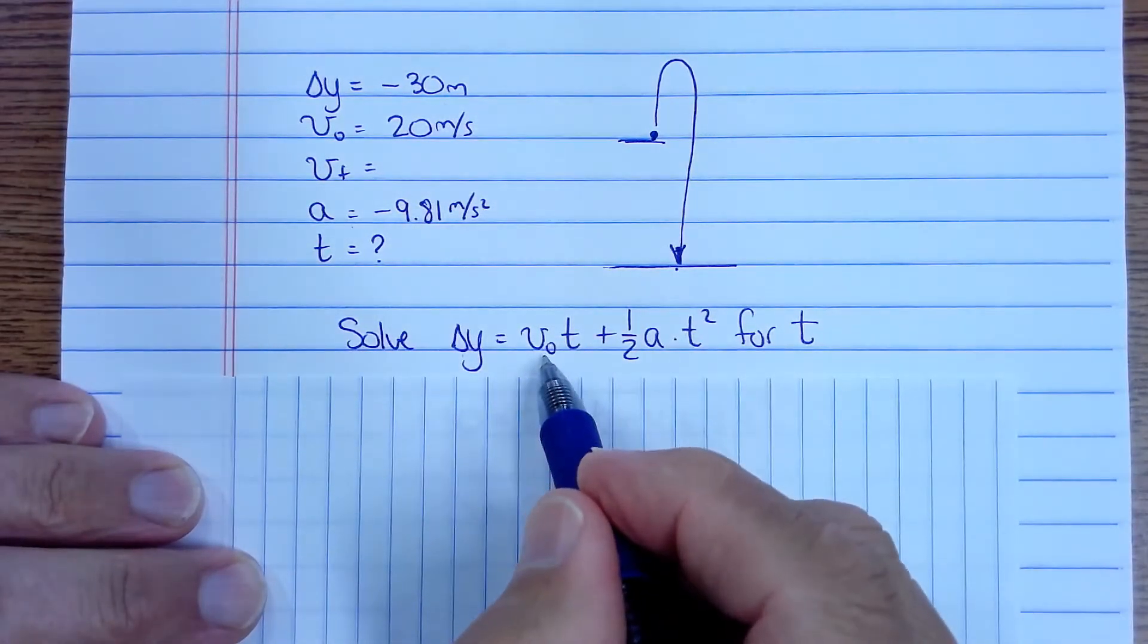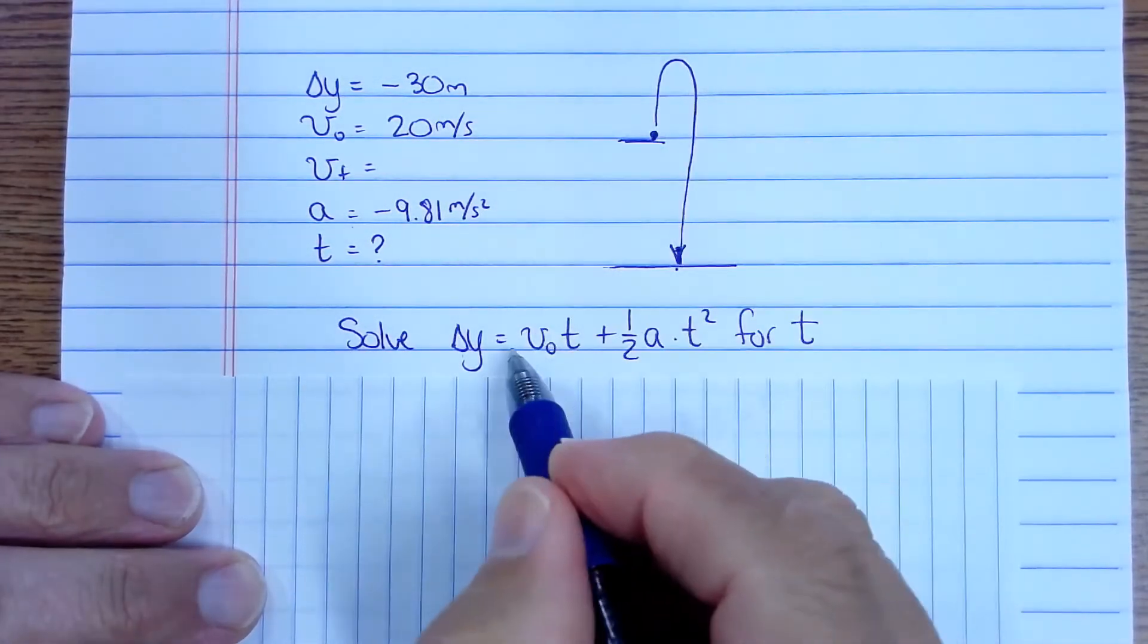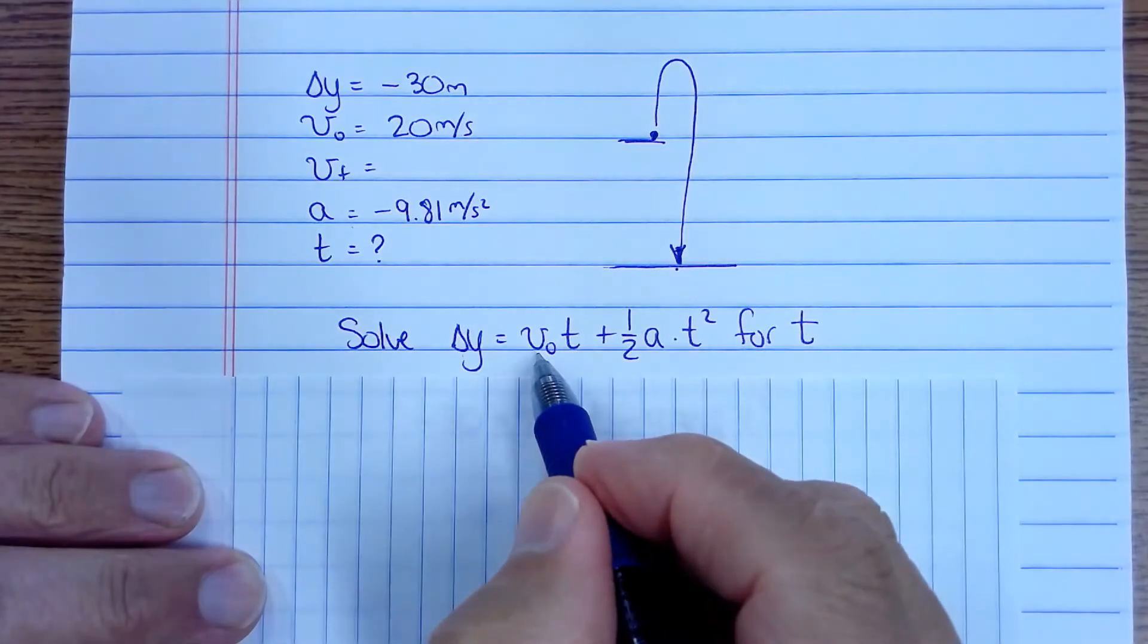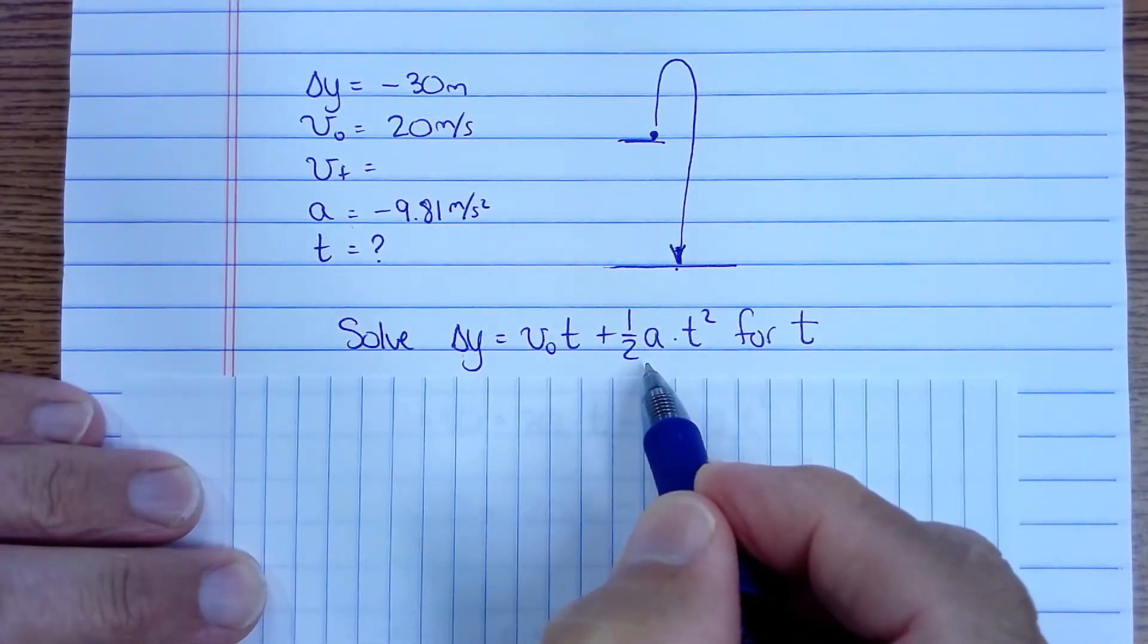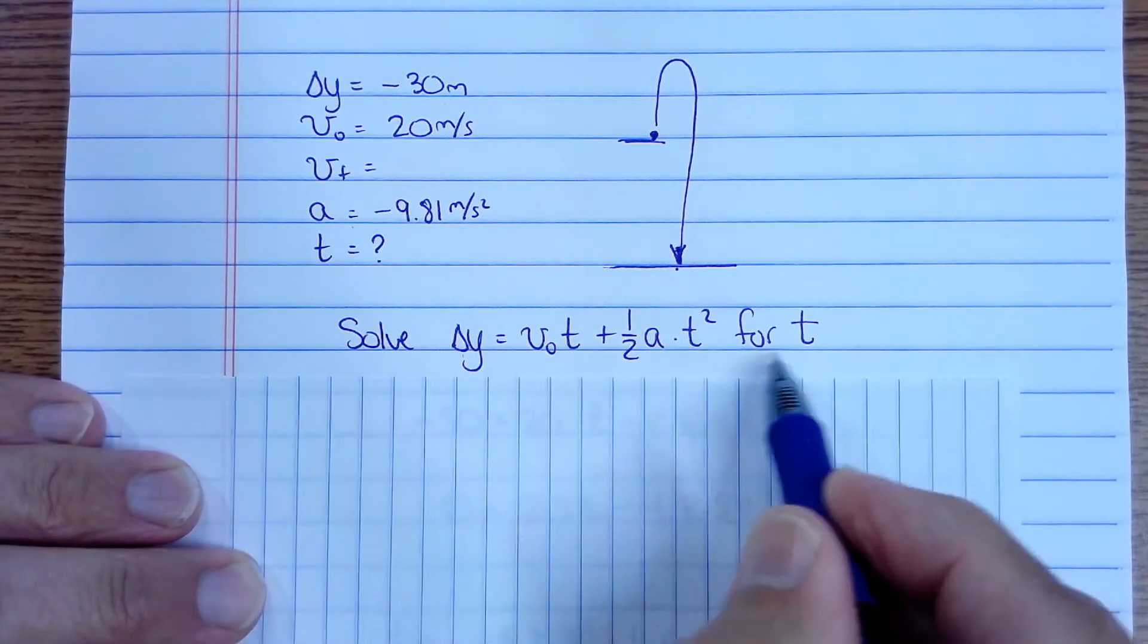You know the initial velocity. If it's launched upwards, it's positive. In my case 20. And you know the acceleration because it's a free fall problem.